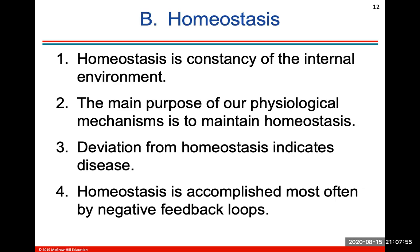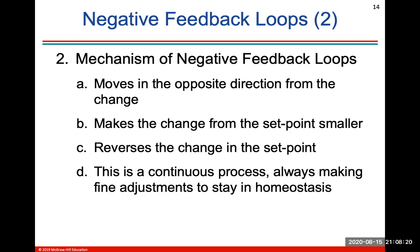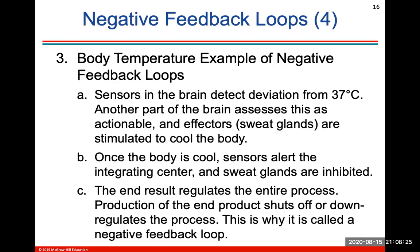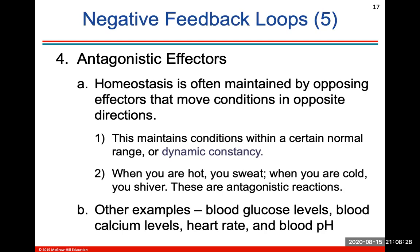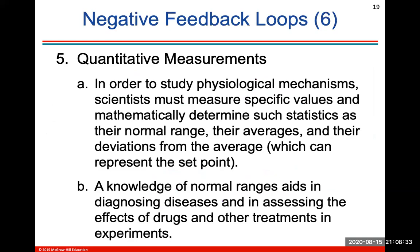Homeostasis is the constancy of the internal environment. The main purpose of all our physiological mechanisms is to maintain homeostasis. Any deviation from homeostasis that can't be corrected by normal body functions will usually indicate a disease, and negative feedback loops will help bring homeostasis back to normal. I'll point you to the lab lecture where I go through these negative feedback loops in more detail if you're confused.